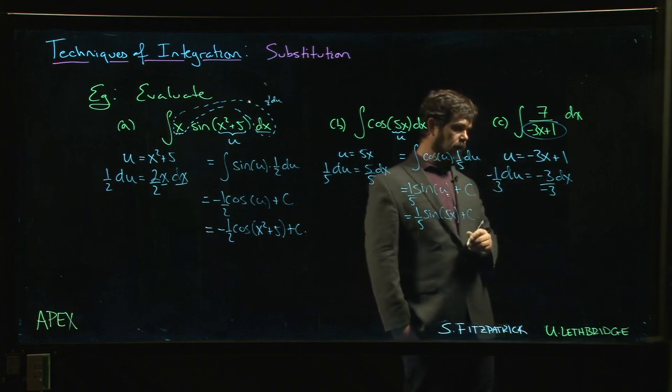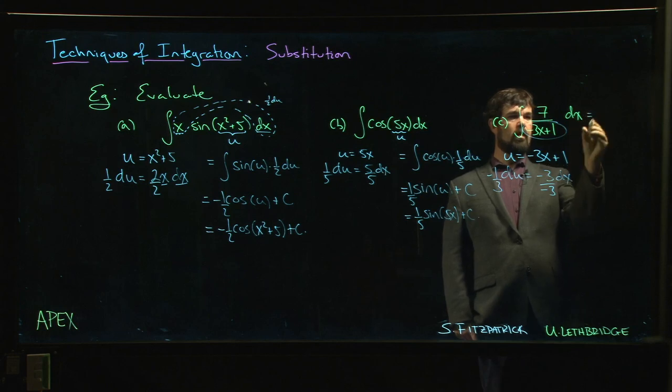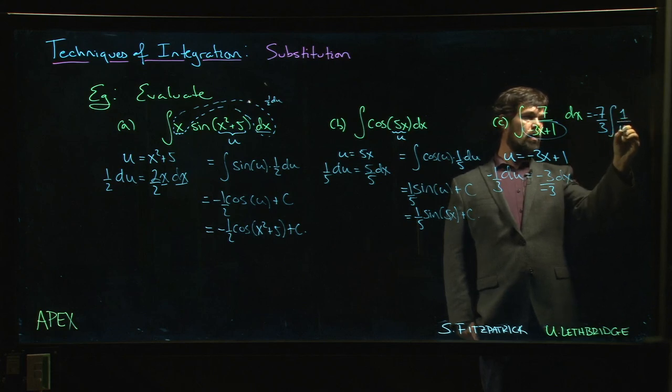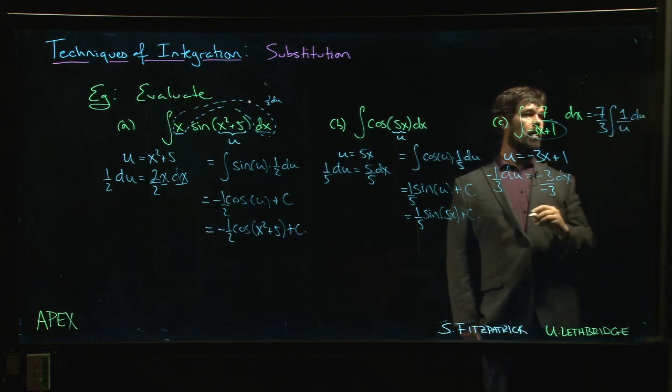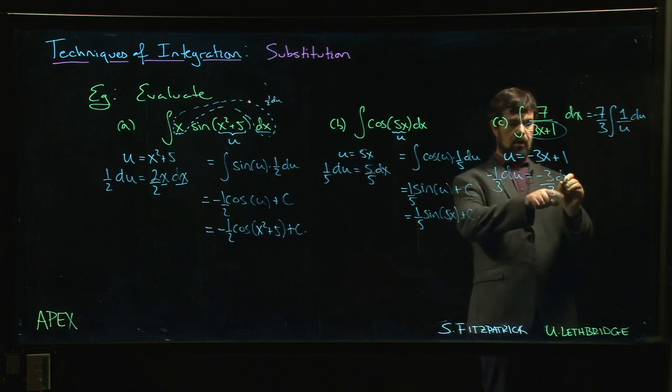So if I do that, then this becomes—and the 7 we can bring out front if we want, we can bring that one over three out front and the minus sign—minus 7 over 3, one over u times du. So the minus one over three times du, that's my dx.